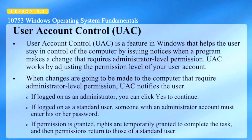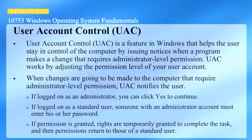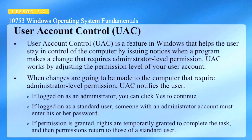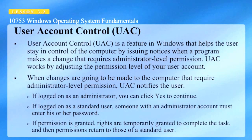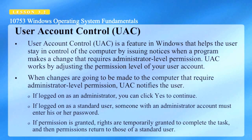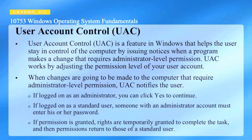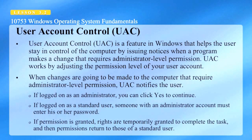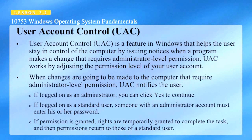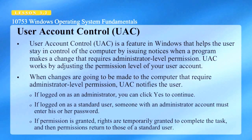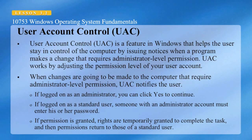User account control, or UAC, is a feature in Windows that can help you stay in control of your computer by informing you when a program makes a change that requires administrator level permission. UAC works by adjusting the permission level of your user account. If you're doing tasks that can be completed as a standard user, such as reading an email, listening to music, or creating documents, you have the permissions of a standard user, even if you're logged on as an administrator.